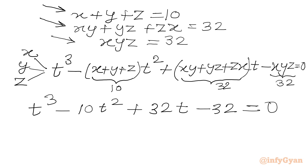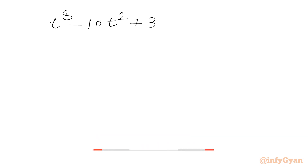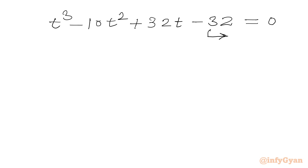The equation is cubic, so we can use the method of synthetic division. I will write the equation: t cubed minus 10t squared plus 32t minus 32 equal to 0. Using the rational root theorem first, we find the eligible factors of the constant 32: plus or minus 1, plus or minus 2, plus or minus 4, plus or minus 8, plus or minus 16, plus or minus 32.